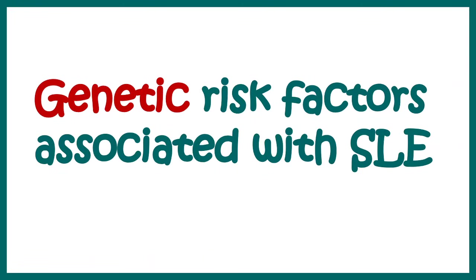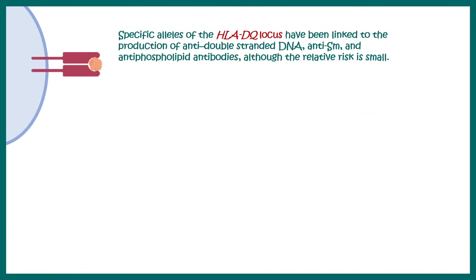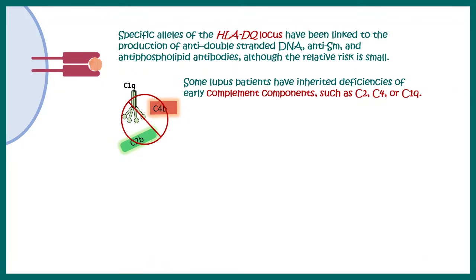Now let's discuss the genetic risk of systemic lupus. There are specific alleles such as HLA-DQ which have been reported to be highly associated with the onset of systemic lupus. Many other antibodies are generated in systemic lupus, such as antiphospholipid antibodies and antibodies against double-stranded DNA. Some lupus patients have inherited deficiencies in complement cascade molecules such as C2, C4, or C1Q, and all of these complement deficiencies can also lead to cellular destruction.